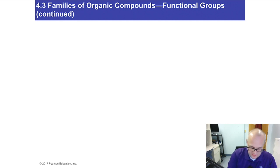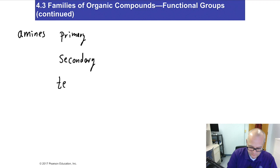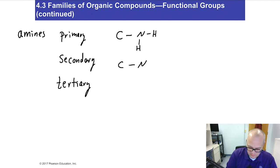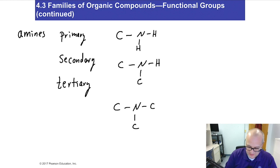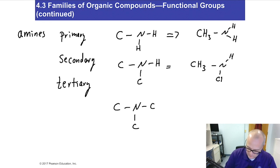The next class of compounds we need to talk about are the amines. There are three types: primary, secondary, and tertiary. A primary amine has one carbon bonded to the nitrogen and the other two are hydrogen. A secondary amine has two carbons bonded to the nitrogen and one hydrogen. A tertiary amine has three carbons bonded to the nitrogen and none are hydrogen. Examples are methylamine, N,N-dimethylamine, and trimethylamine.